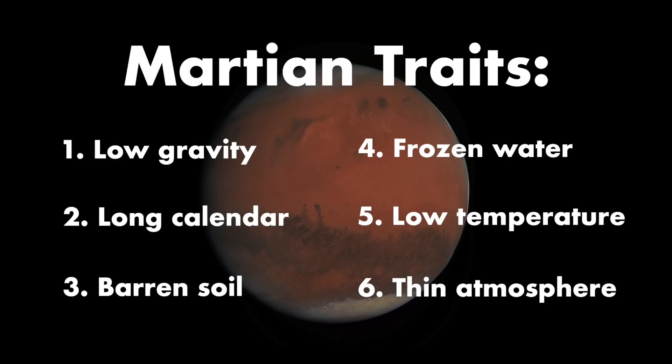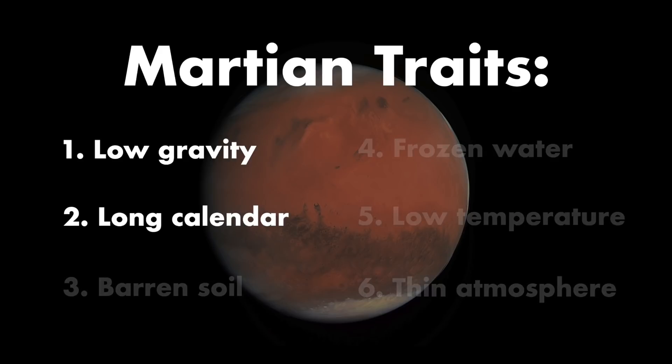We can understand terraforming as the process of taking specific features of Mars and transforming them to be more like features of Earth. To explain how terraforming could be achieved, I'll briefly examine each of six Martian traits.